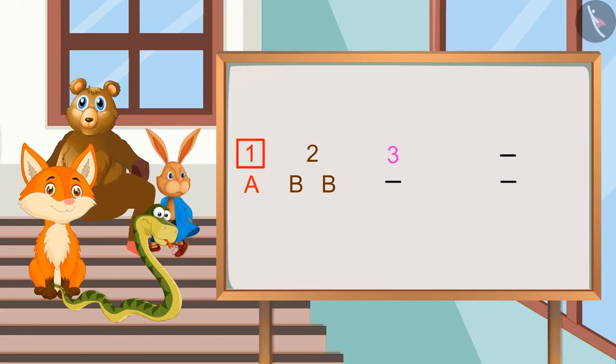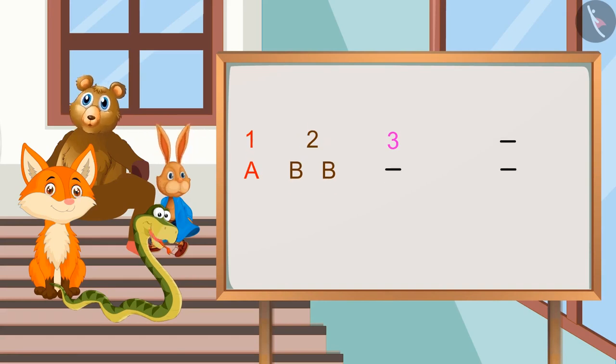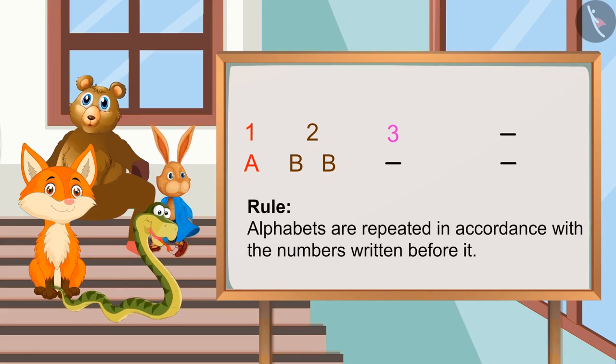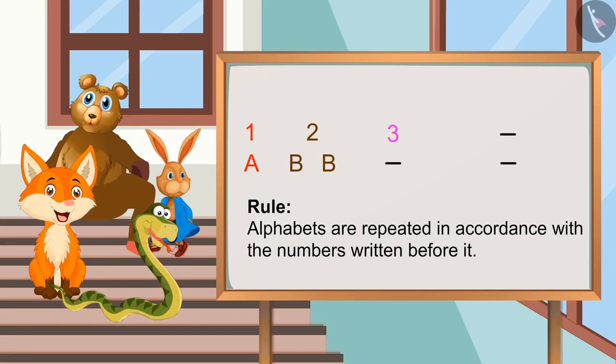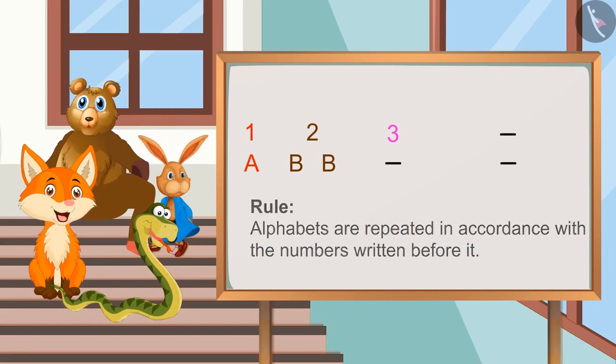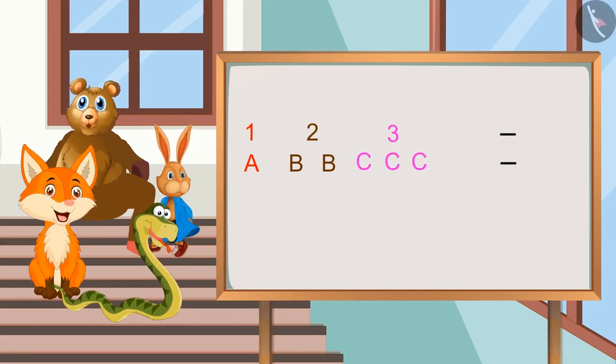First we have the number 1, then alphabet A for once. Then we have number 2 and alphabet B is written twice. So the rule for this is alphabets are repeated in accordance with the numbers written before it. Absolutely right, Kamini. So according to this rule, in the first blank, we will write C for 3 times.